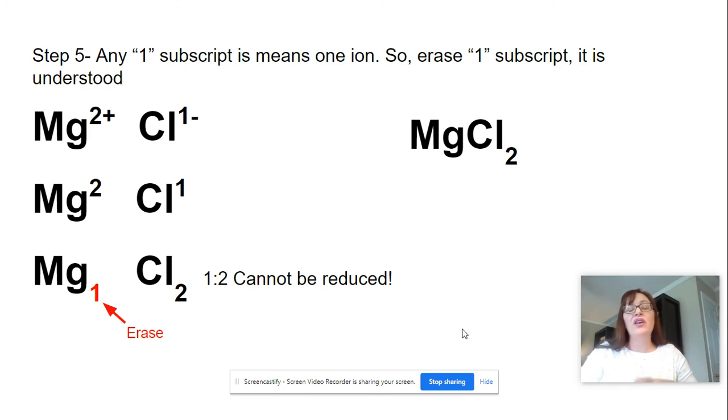Step 5, if you have a subscript after it's reduced, if you have a subscript that is a 1, you don't write 1s, they're understood. If you don't write the 1, it means 1. If you just write the Mg here, that means 1 ion.